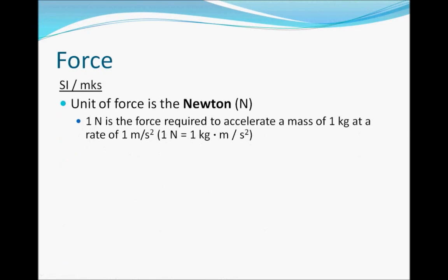The next quantity we'll talk about is force, which is closely related to mass in many ways. The SI unit for force is called the Newton, and one Newton is defined as the force required to bring an object with a mass of one kilogram up to a rate of acceleration of one meter per second squared. If you remember Newton's second law — force equals mass times acceleration — a unit of force should be made out of a unit of mass times a unit of acceleration. Therefore, a Newton is one kilogram times a meter per second squared. SI is the MKS system, so every unit in it is made of meters, kilograms, and seconds, and the Newton is one very good example.